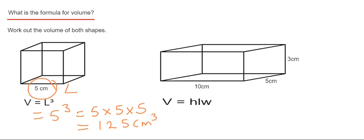So let's have a look at the second one then. This time we have a cuboid. And the formula for working out the volume of a cuboid is V equals HLW, where V is the volume, H is the height, L is the length, and W is the width.